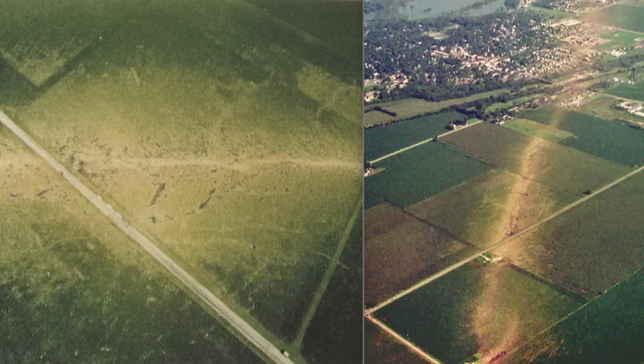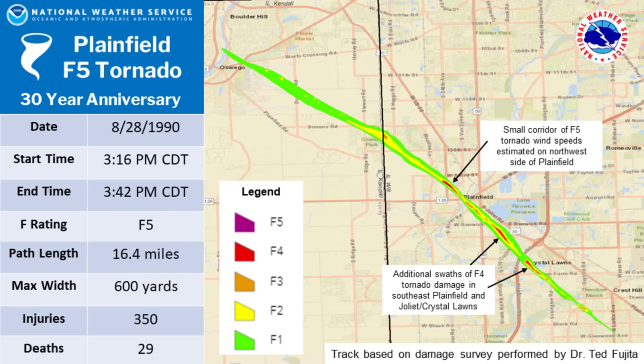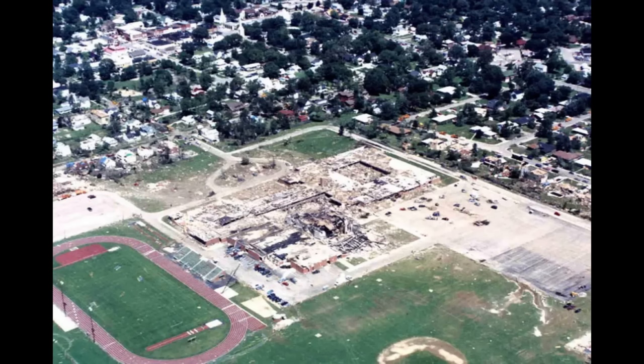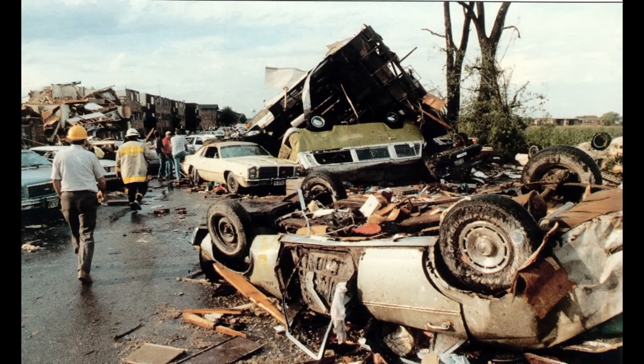A very violent tornado touched down at 3:15 p.m. near Oswego, Illinois, and rampaged through a Wheatland Township subdivision, demolished a high school in Plainfield, and lifted as it entered Joliet. Because there was no warning, no known photos of this tornado exist.